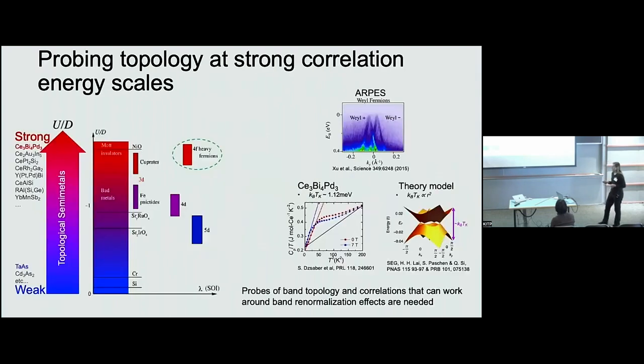And furthermore, there's also just a general wanting to look at topological semimetals in the context of strong correlation regimes. So if we plot the Coulomb interaction ratio of Coulomb interaction over a band width in a given system.